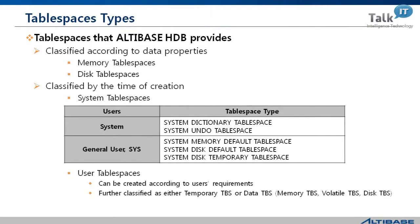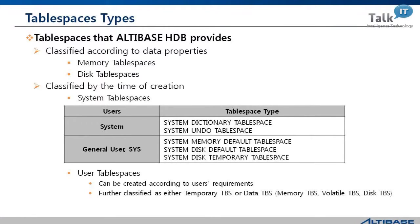The other three system tablespaces can be used by both the sys user and general users. The temporary tablespace stores information about all temporary results of a query — it is literally temporary, so the data is deleted once the related statement finishes executing. When a user wants their own tablespaces, they can create them; these are called user tablespaces. A user tablespace is created according to user preferences such as size, name, and directory. The tablespace can be created by a sys user with DBA authority using the CREATE TABLESPACE syntax.